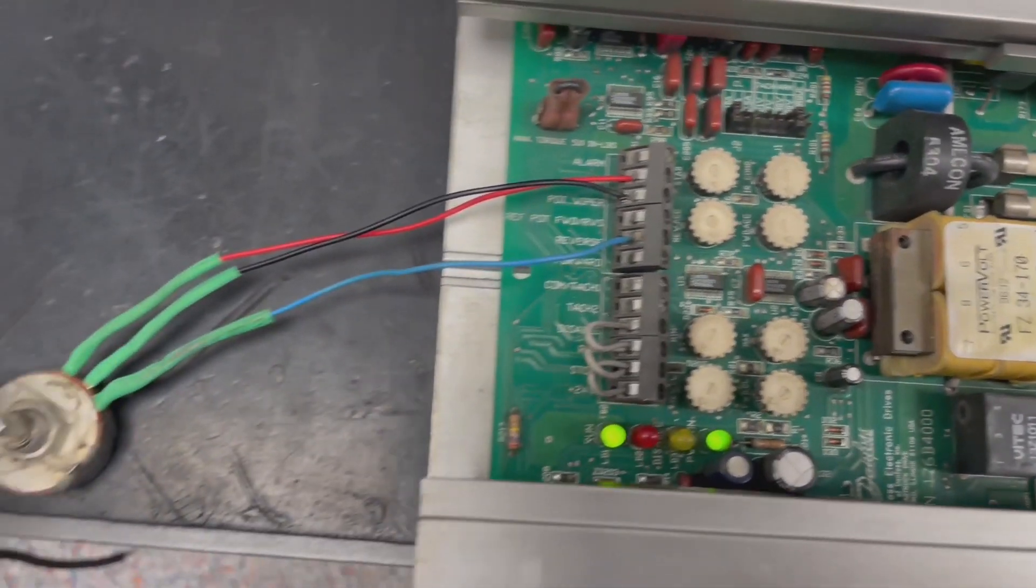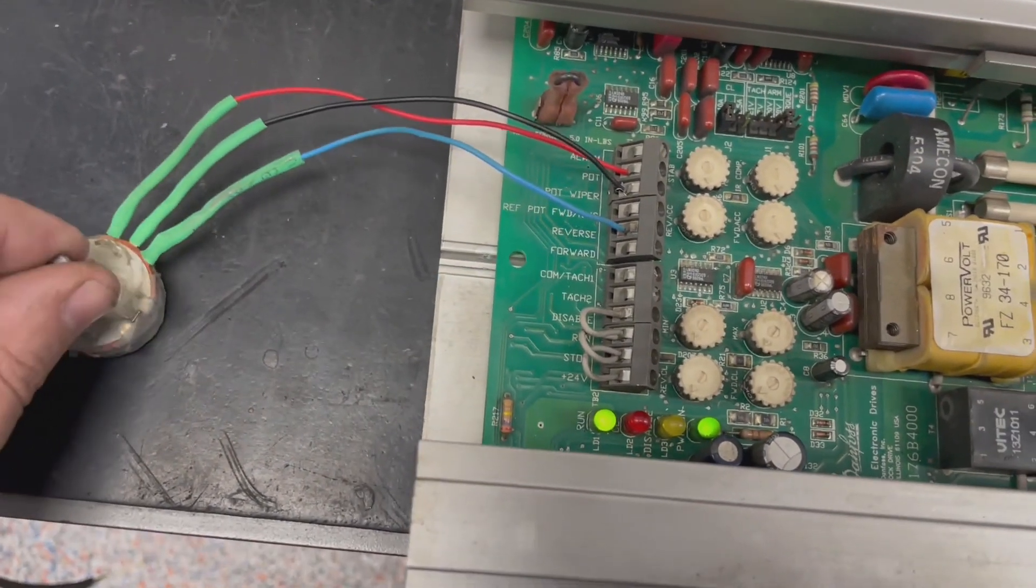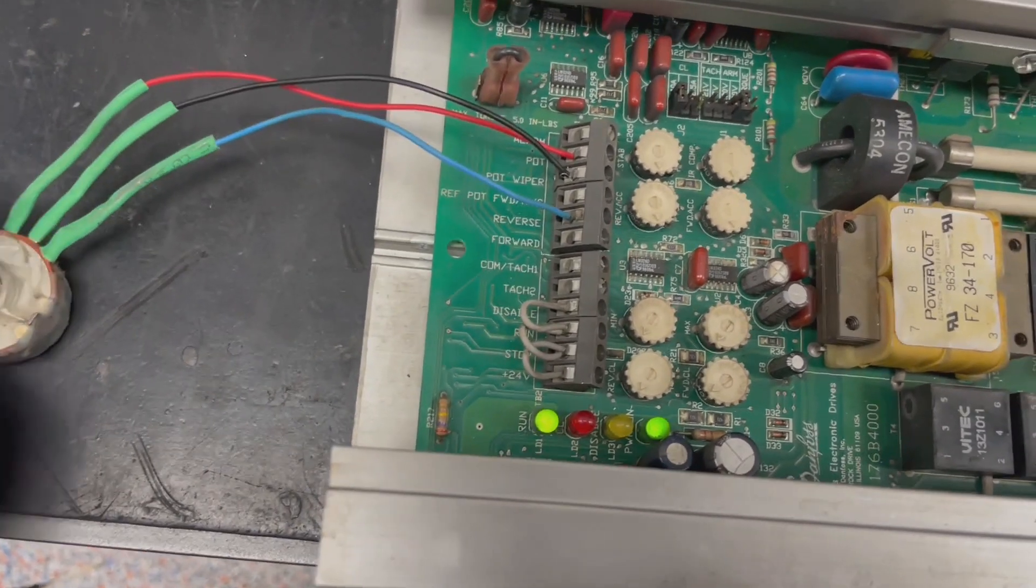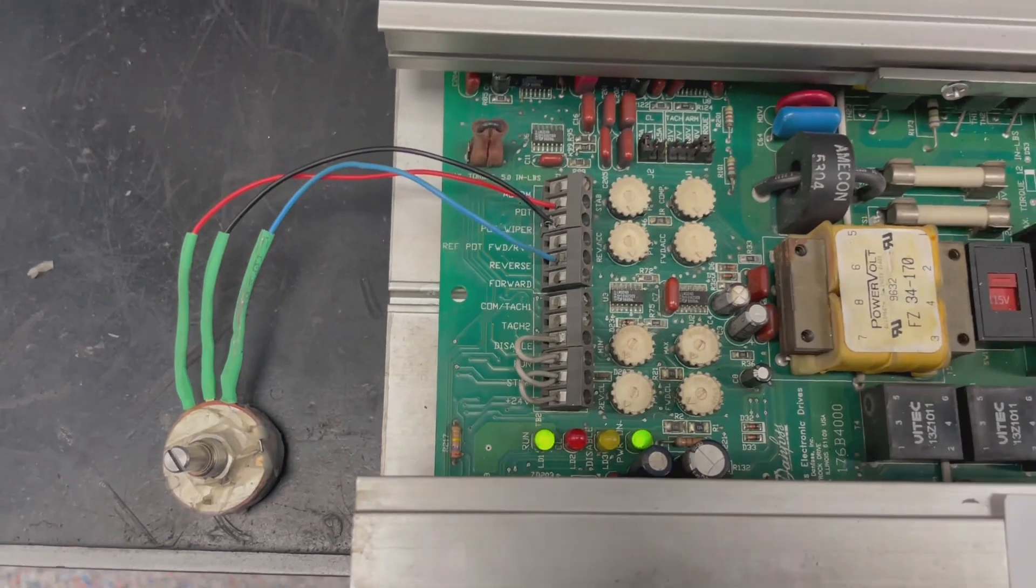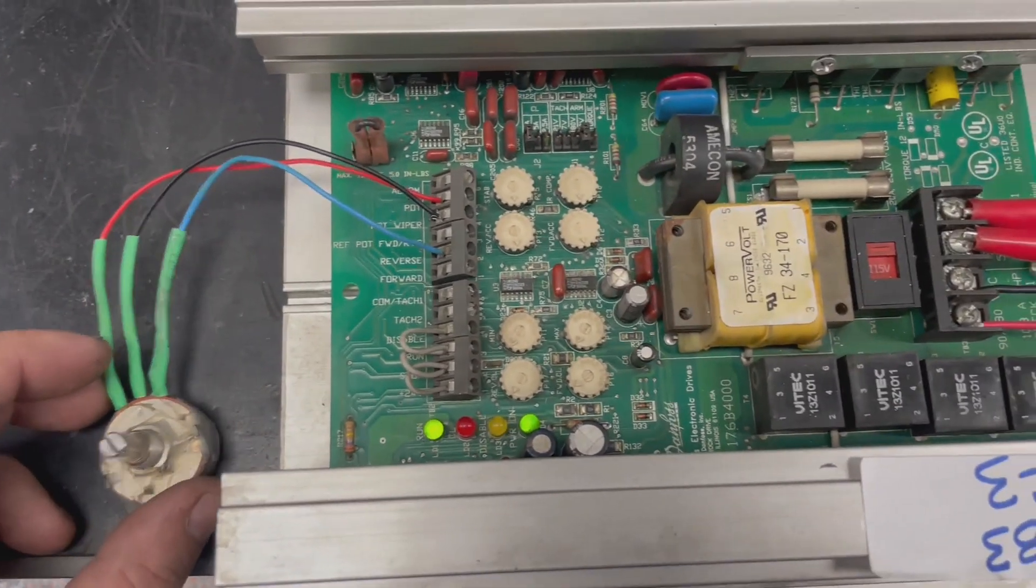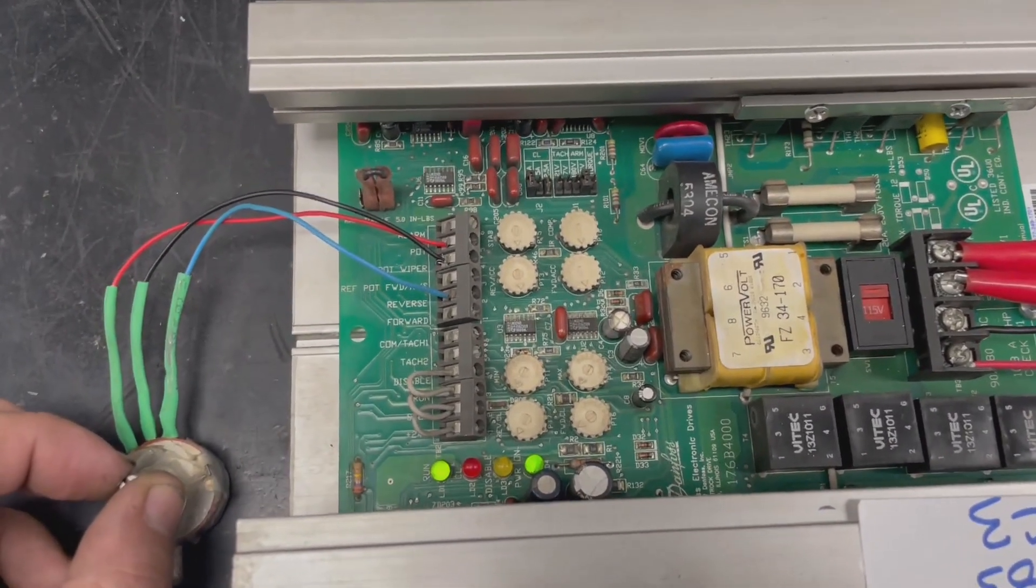We have our pot wiper on reverse rotation and we're going to zero the position and make sure we're set at zero. Now we'll go ahead and increase our pot and see if the motor runs.